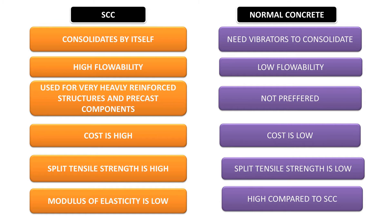SCC consolidates by itself, while normal concrete needs a vibrator to consolidate. SCC has high flowability whereas normal concrete flowability is very low. SCC is used for heavily reinforced structures and precast components where normal concrete is not preferred. SCC cost is very high compared to normal concrete. Split tensile strength is high in SCC and low in normal concrete. Modulus of elasticity is lower in SCC and higher in normal concrete.